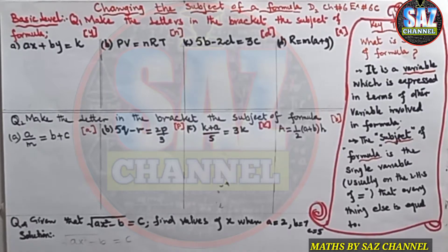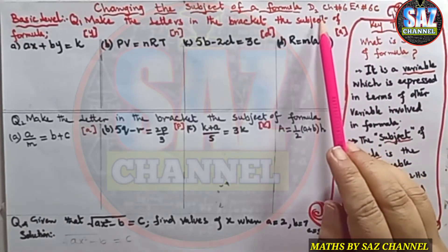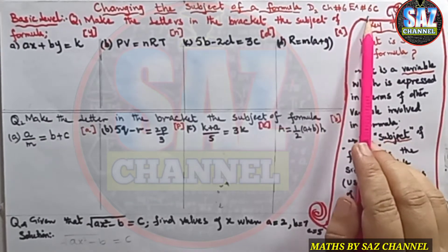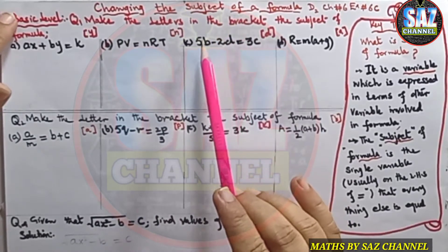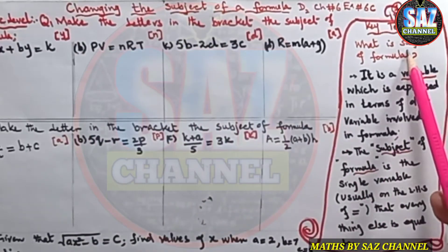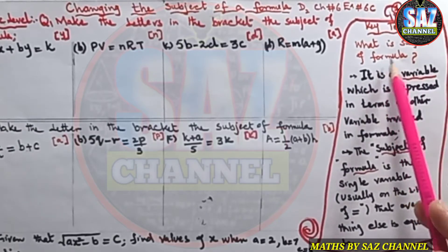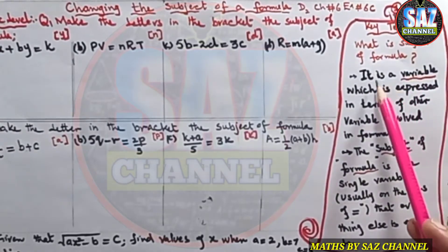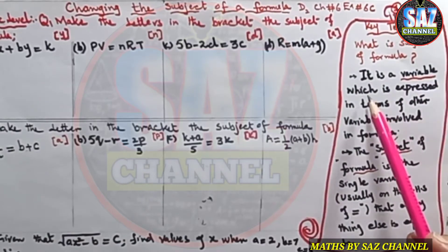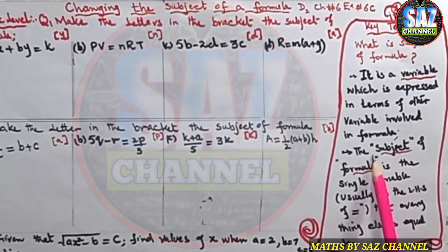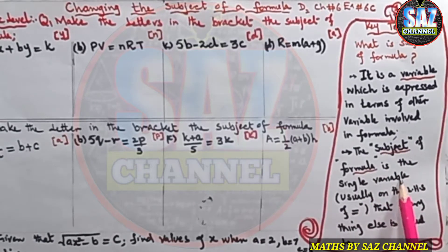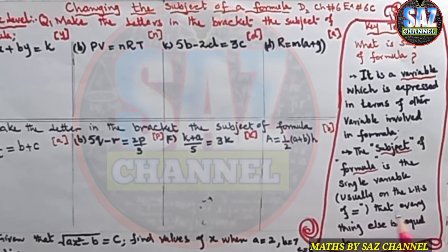Hello and welcome to Maths by SAS. This is my first lesson of D2, Chapter 6, Exercise 6C, about changing the subject of a formula. Before going to the lesson, there are some key terms to understand. The subject of a formula is a variable expressed in terms of other variables — it is the single variable, usually on the left-hand side of the equal sign, that everything else is equal to.